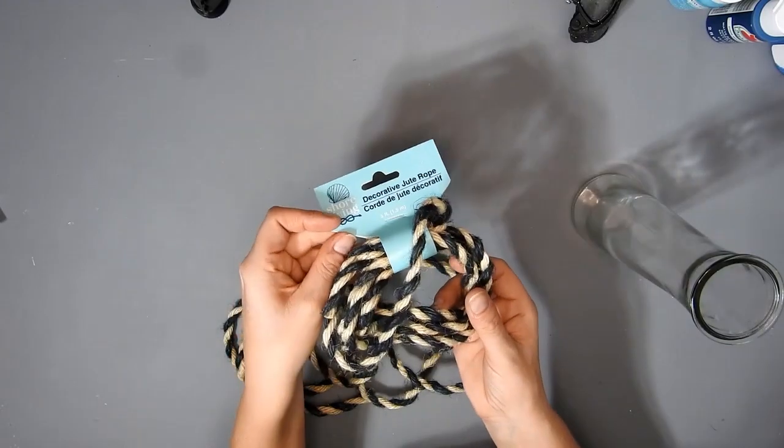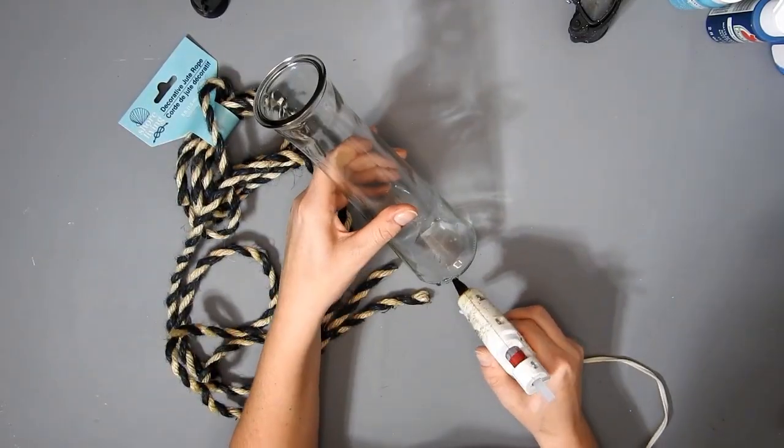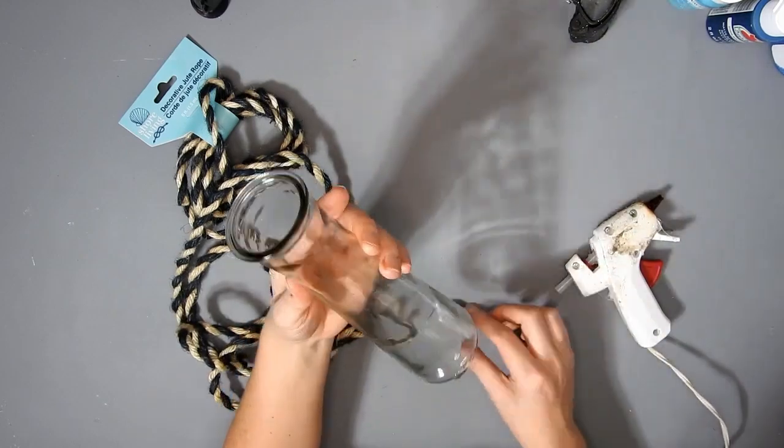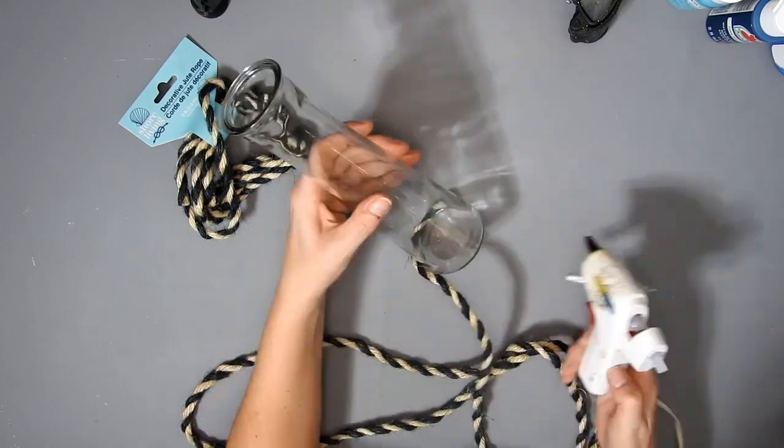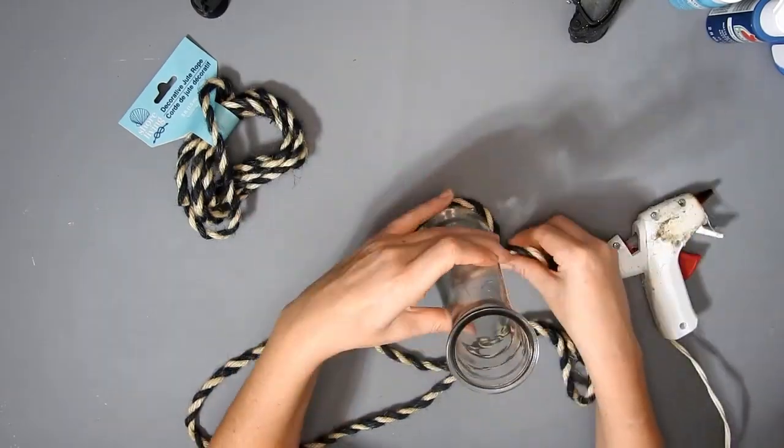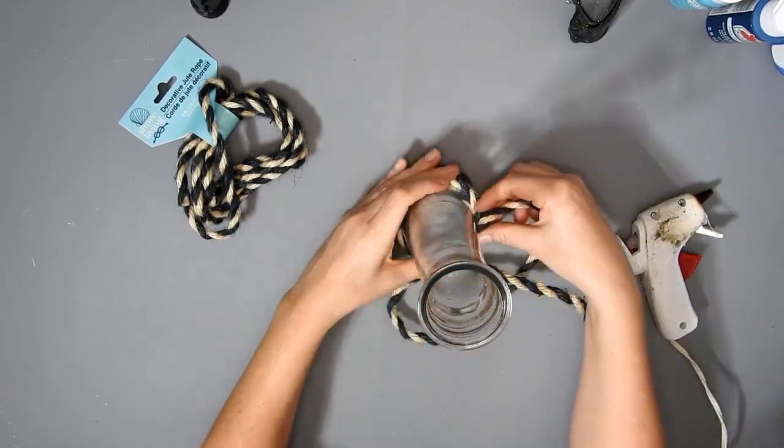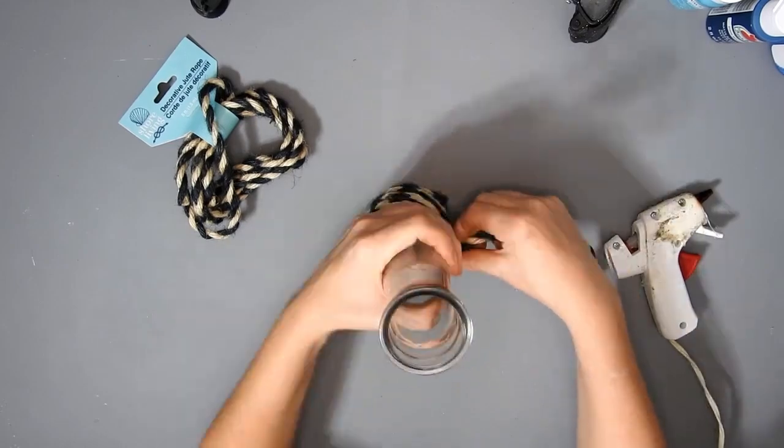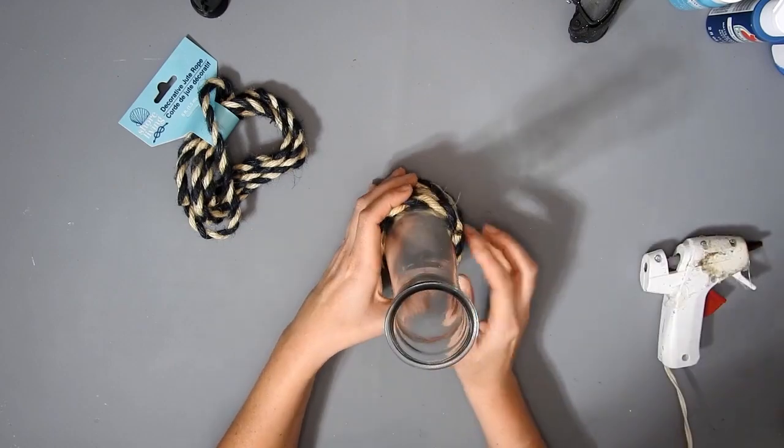This next DIY I have this vase and some of the new nautical rope that I found, and I'm only showing two here but I ended up using three of these. I just hot glue at the bottom, then wrap it around, and then hot glue it at the end.